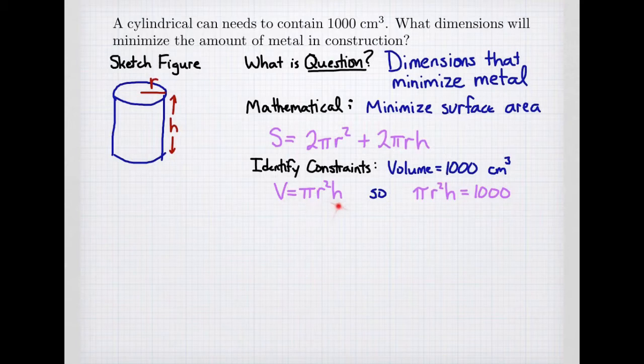The formula for volume of a cylinder is πr²h. And so we create an equation that the volume, πr²h, equals 1,000.